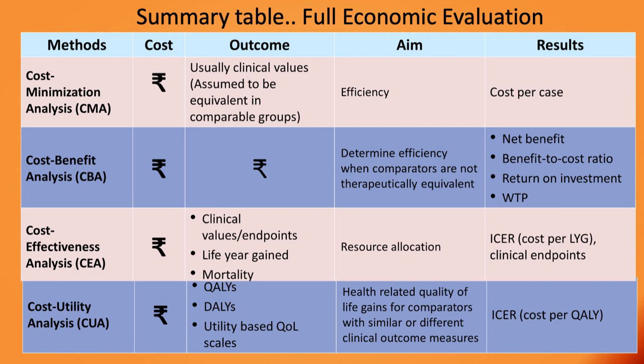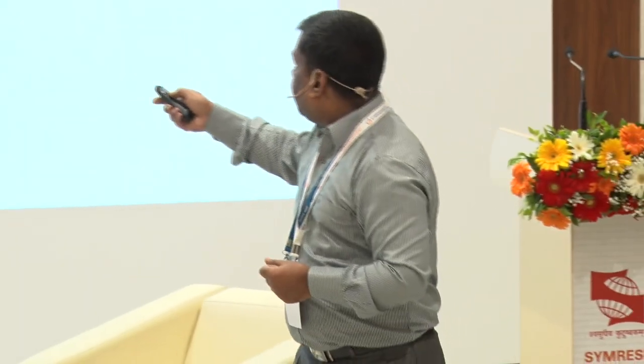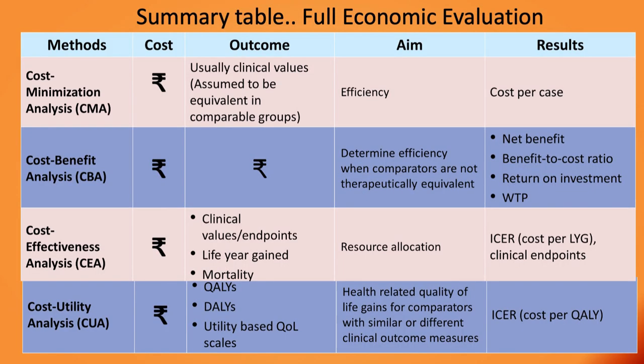Cost benefit analysis measures both costs and outcomes in monetary units. To measure a health outcome in monetary units, you value a person's life monetarily — this is the willingness-to-pay approach. For example, if a life is extended by ten years, how productive could that person be? Cost benefit analysis is useful for policy makers because you communicate in the same monetary scale — you invest this much money and you get back this much value — and results can be reported as net benefit, return on investment, or willingness to pay.